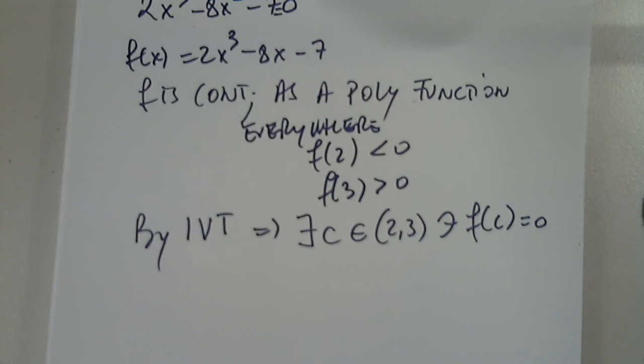Okay, anything else? In that calculation, when you got F of 3 is positive and F of 2 is negative, when I typed it into my calculator, I got them both negative.